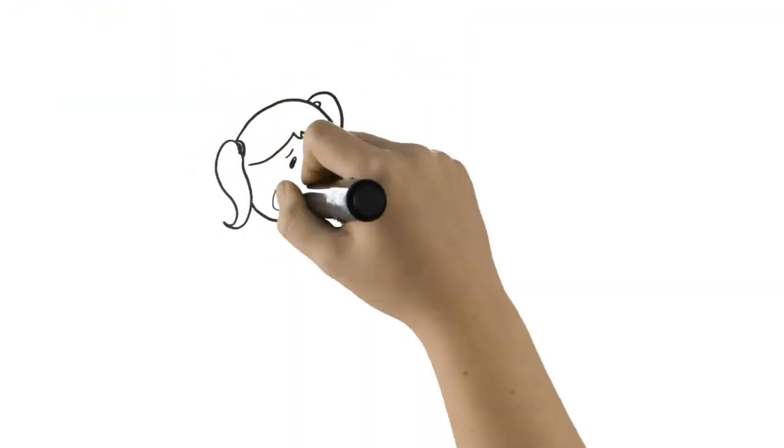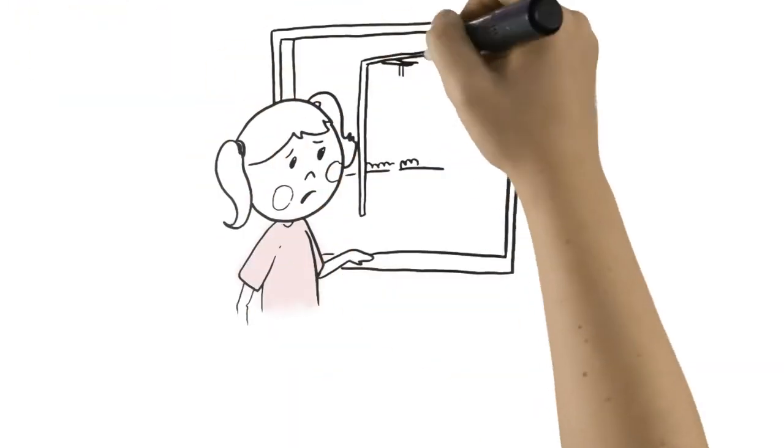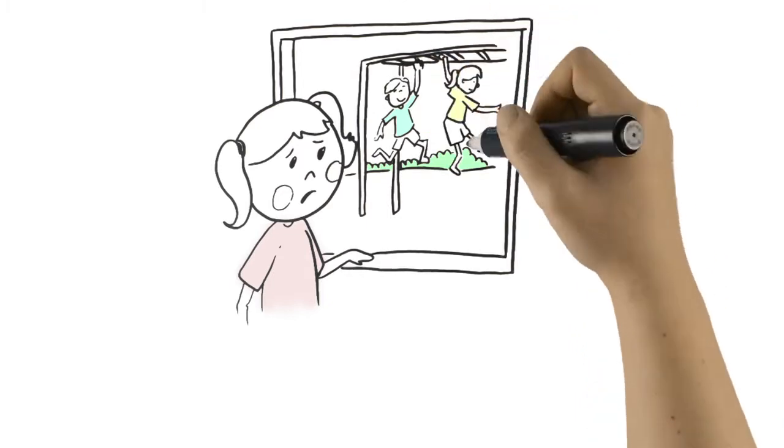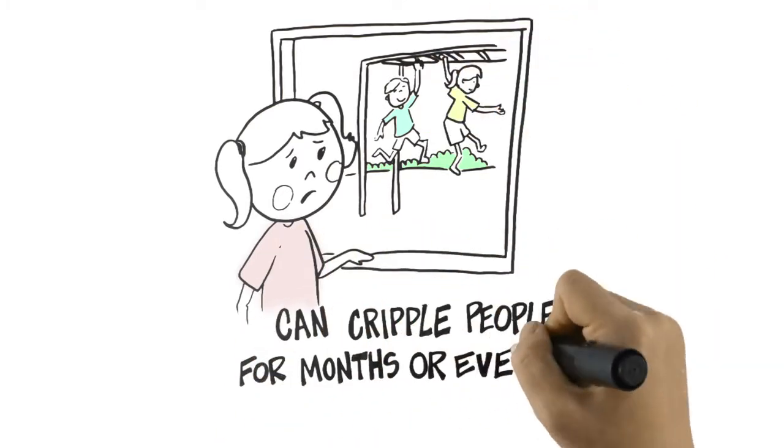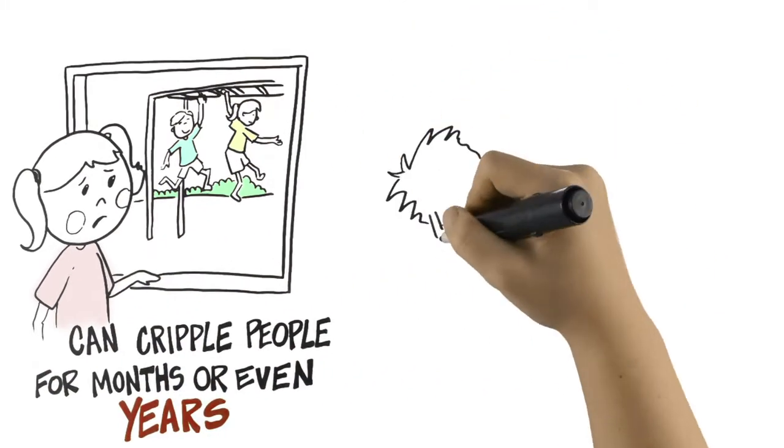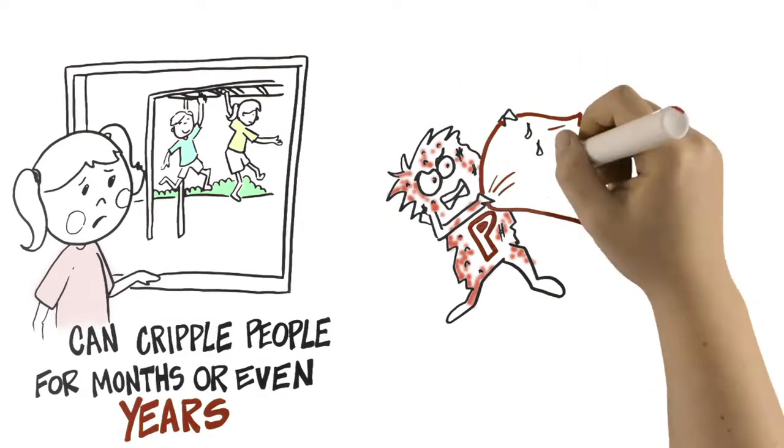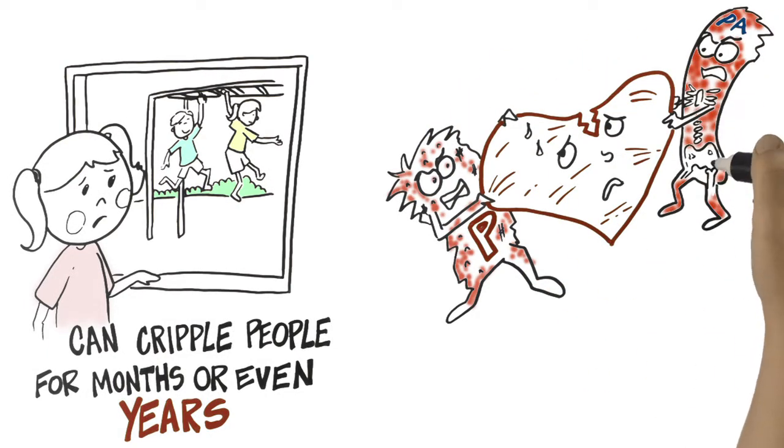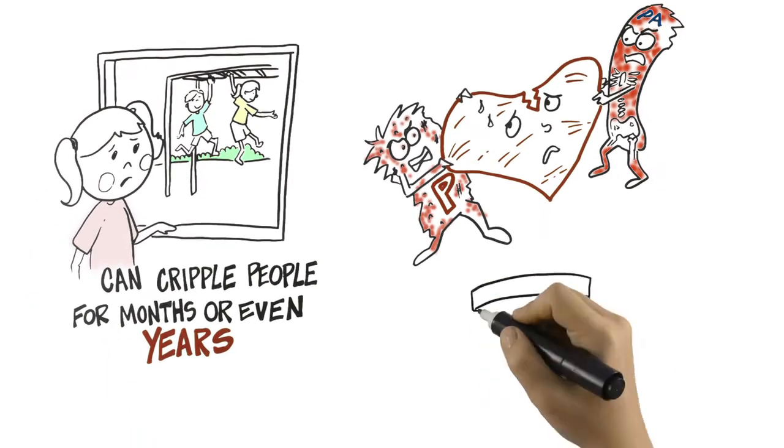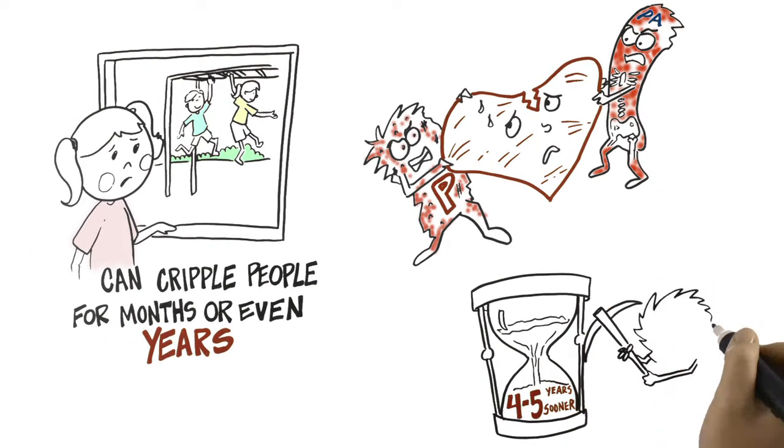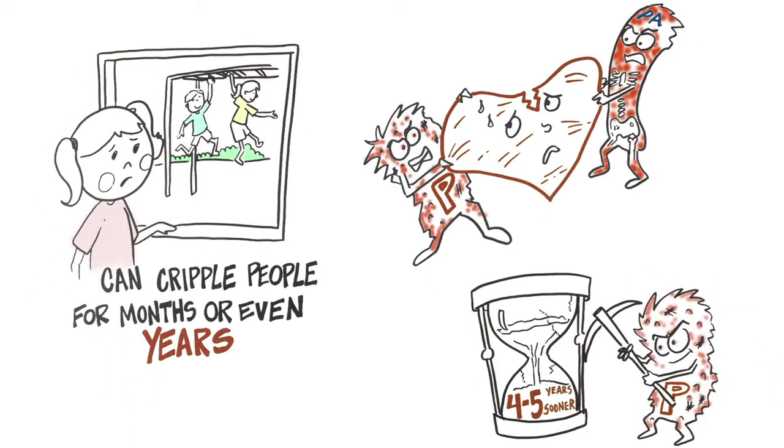I get really painful joint pain. Like other kinds of arthritis, psoriatic arthritis can cripple people for months or even years at a time. And unlike other kinds of joint pain, psoriatic arthritis increases the risk of dying from a heart attack or cancer. The disease itself can cause me to die four to five years sooner than if I didn't have it.